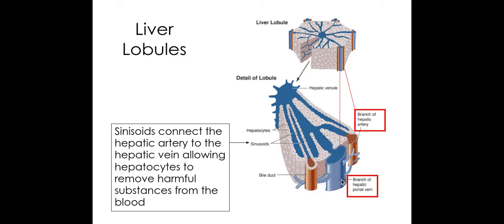The hepatic portal vein has a wide diameter, and we know from our earlier AS studies that a vein has a wider lumen than an artery. So you can tell the difference in an image between the artery and the vein.